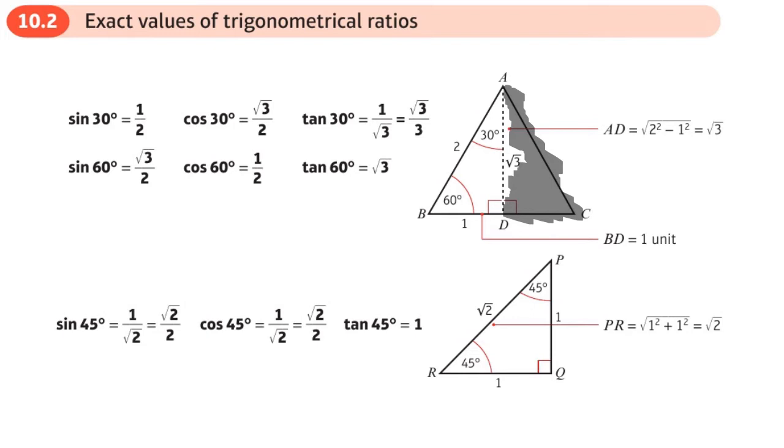The triangle at the bottom is an isosceles triangle so we know the two angles are 45 degrees. Again using Pythagoras we can work out this side is root 2, so we can find the exact values of sine, cos, and tan 45. These values are useful to remember and we can probably summarize them in a table.